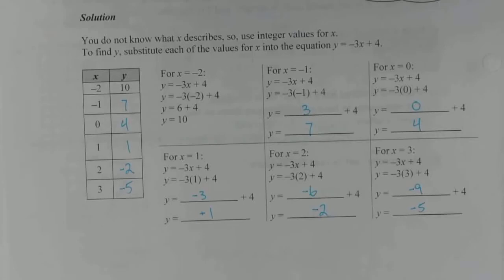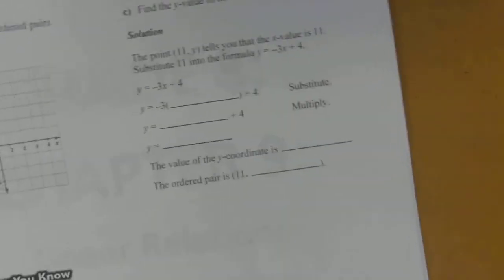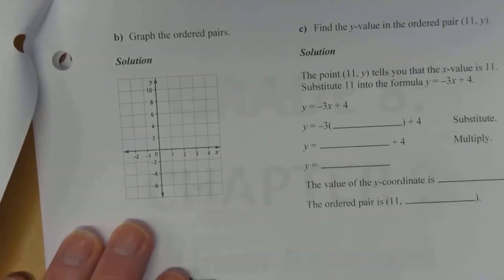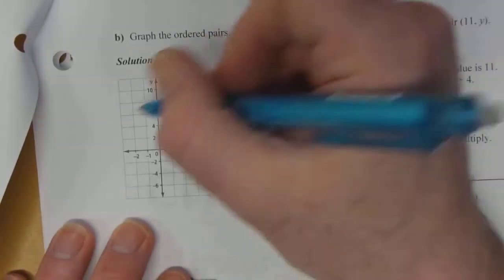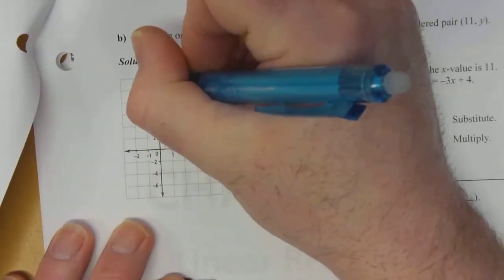So that tells us that it's going to be a straight line when we graph it. Alright. Graph the ordered pairs. That's part B. So negative 2 and 10 was our first one. So we start at the origin. Negative 2 and then up to positive 10.